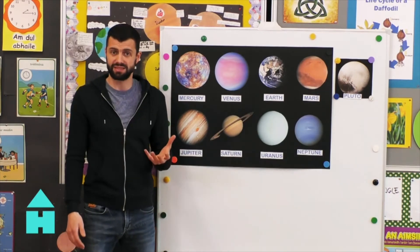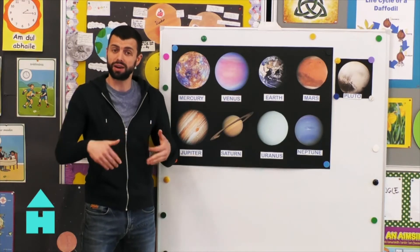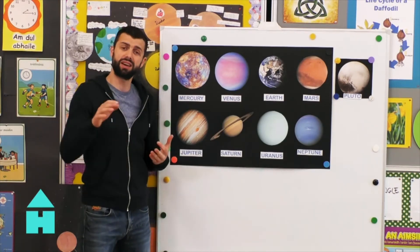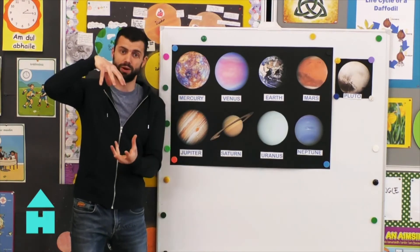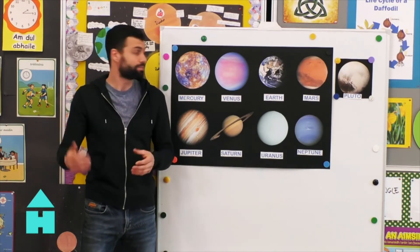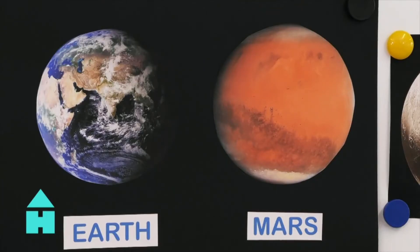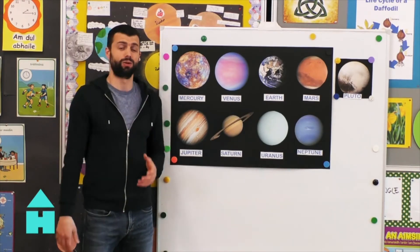Mars also has seasons. It has clouds, it has weather, just like we do on our planet. Now like Earth, Mars has ice caps on the North and South poles. And the surface of the planet is covered in mountains, volcanoes and canyons. The weather on Mars is actually very similar to Earth too. Mars is further away from the sun than we are though, so parts of the planet can get very, very cold.